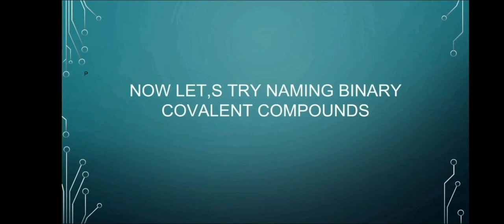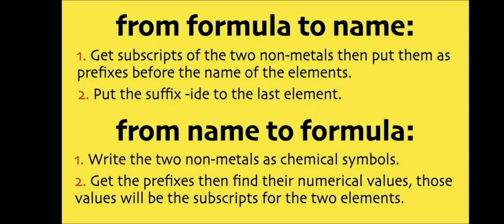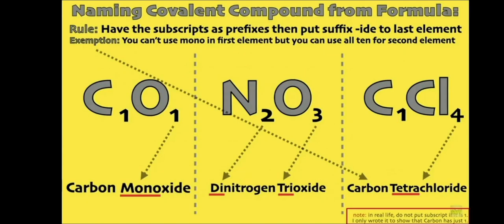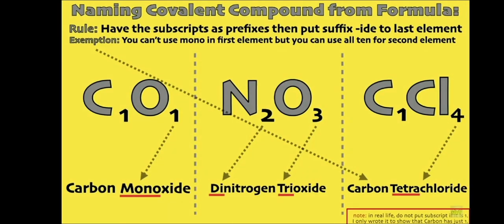Now, let's try naming binary covalent compounds. From formula to name: First, we get subscripts of the 2 non-metals, then put them as a prefix before the name of the elements. Second, we put the suffix -ide to the last element. From name to formula: First, we write the 2 non-metals as chemical symbols. Second, we get the prefixes then find their numerical values. Those values will be the subscripts for the 2 elements.